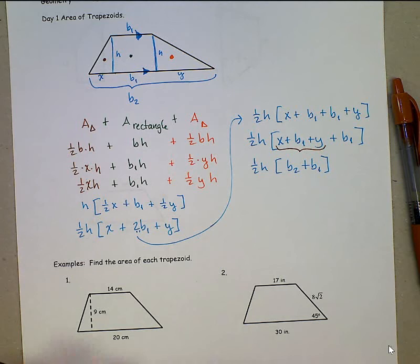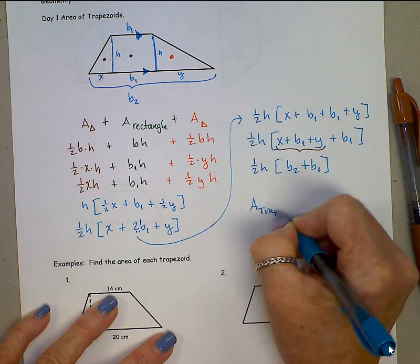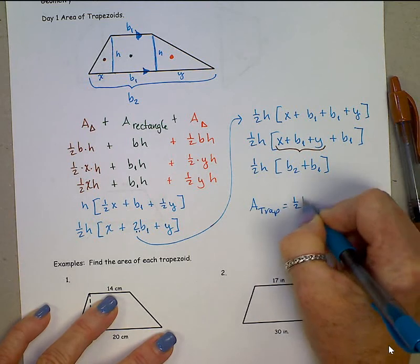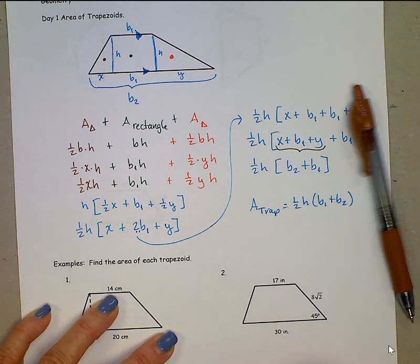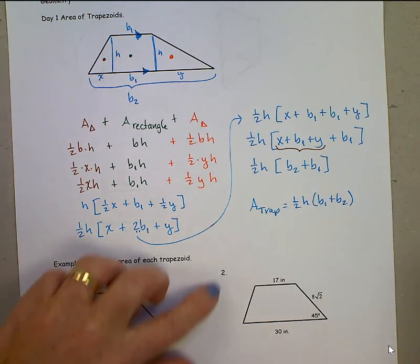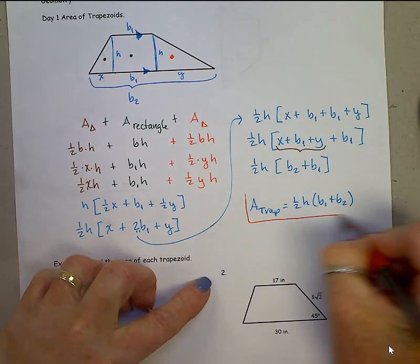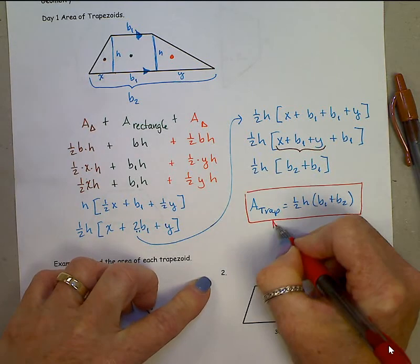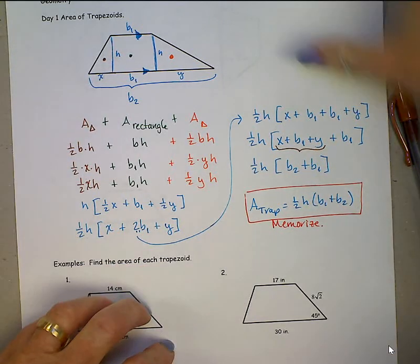Okay, all of this work, just to come up with, the area of a trapezoid is 1 half height times the sum of the bases. Base 1 plus base 2. Out of all of this, this just showed you where it came from. All I really need you to memorize is that formula.